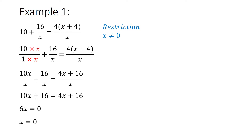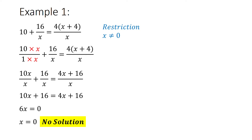Now this is where the restriction comes in. I've already said x can't be equal to 0, so this solution that I've got is not valid. There's no solution to this equation — that's all it means. And you would write 'no solution' based on what you've said in your restriction.